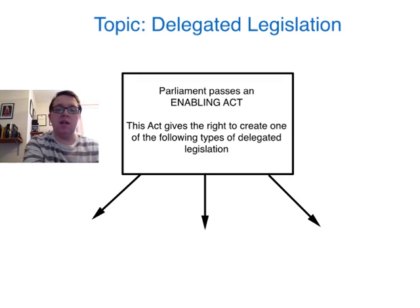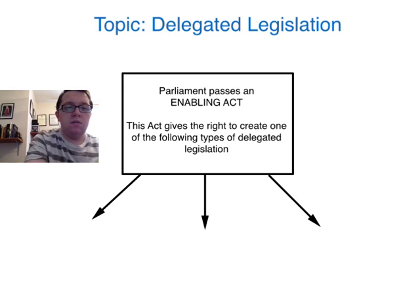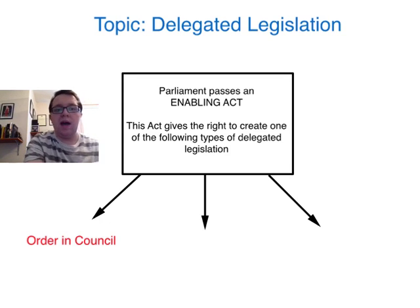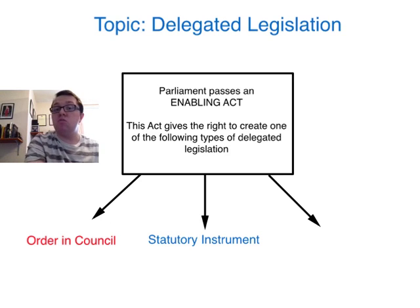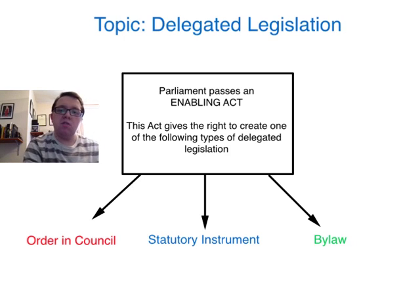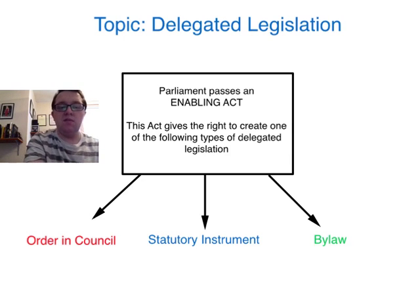So the three different types of delegated legislation are as follows: we have an Order in Council, we have a Statutory Instrument, and we have a By-law. Those are the three types of delegated legislation, all made by different individuals.